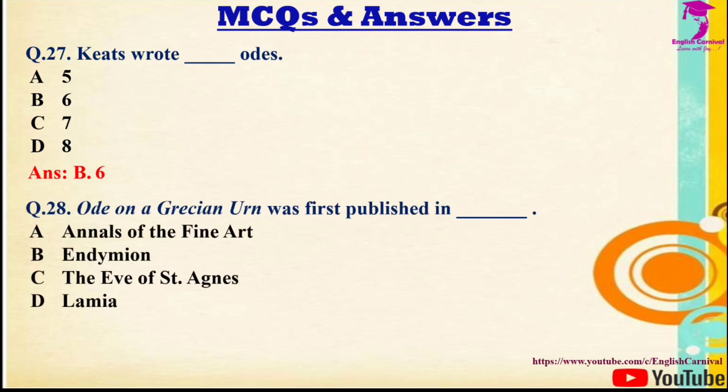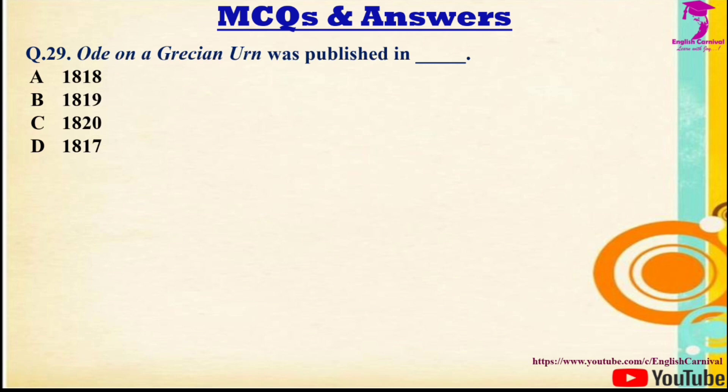Question 28: Ode on a Grecian Urn was first published in — Options: A) 1818, B) 1819, C) 1820, D) 1817. The correct answer is C — 1820.